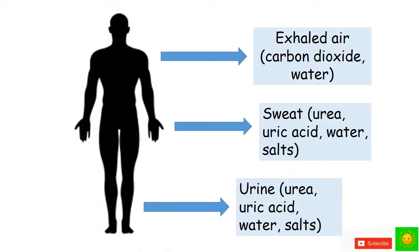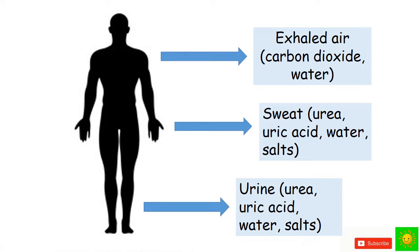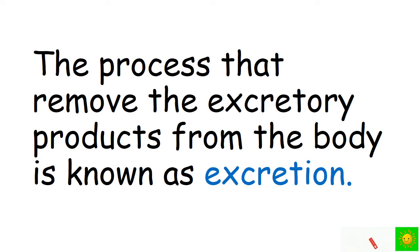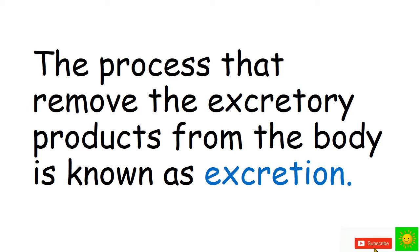The excretory products in the human body include: exhaled air containing carbon dioxide and water; sweat containing urea, uric acid, water, and salt; and urine containing urea, uric acid, water, and salt. Excretory products can damage cells when they accumulate in excess amounts and some may be toxic. The process that removes excretory products from the body is known as excretion.